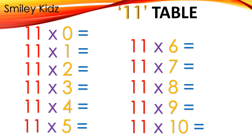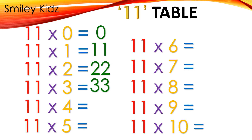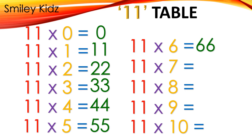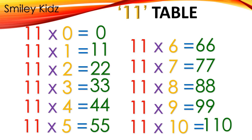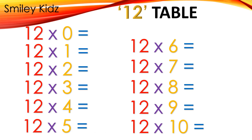Table 11: 11×0=0, 11×1=11, 11×2=22, 11×3=33, 11×4=44, 11×5=55, 11×6=66, 11×7=77, 11×8=88, 11×9=99, 11×10=110.